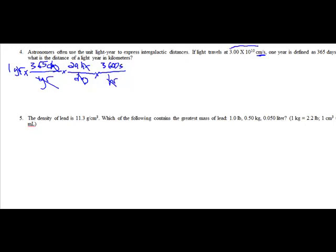What I can do now is use this as a conversion factor, my speed. So I can do times 3.00 times 10 to the 10th centimeters over seconds. The seconds will cancel out. Now I have centimeters.